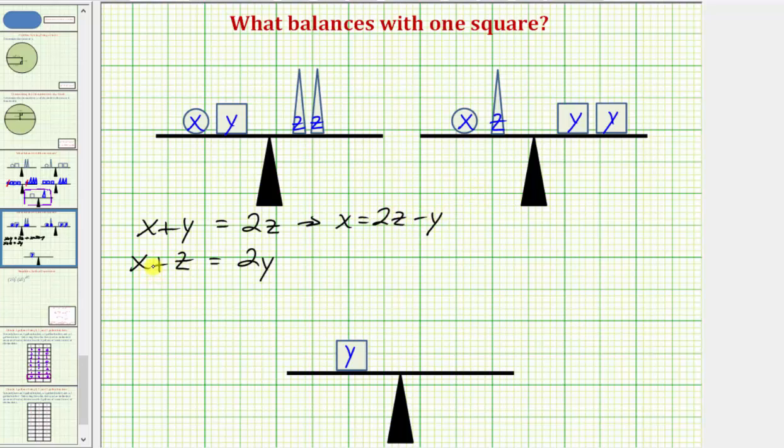We solve the second equation for x, we would subtract z on both sides. So we'd have x equals 2y minus z. And now because we have x equals 2z minus y, and x equals 2y minus z, we can form one equation with y and z. We can substitute 2z minus y for x here, since 2z minus y is equal to x.